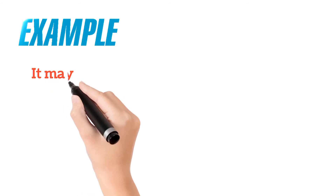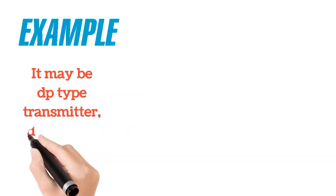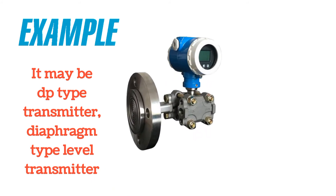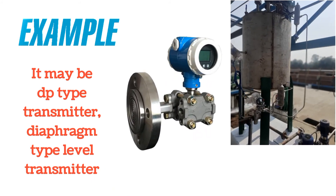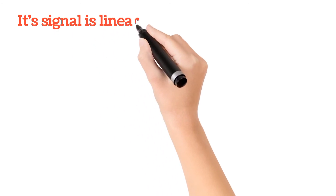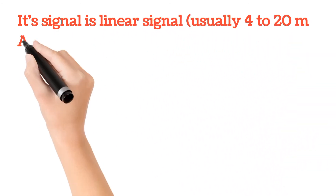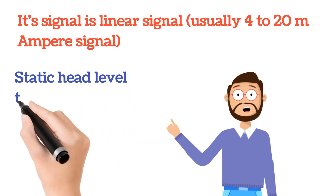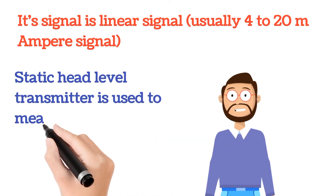Examples of static head level transmitters include the DP type transmitter and the diaphragm type level transmitter. The DP type is shown on the right side image and the diaphragm type on the left side image. Its signal is a linear signal — usually 4 to 20 milliampere — and it measures the total liquid level.